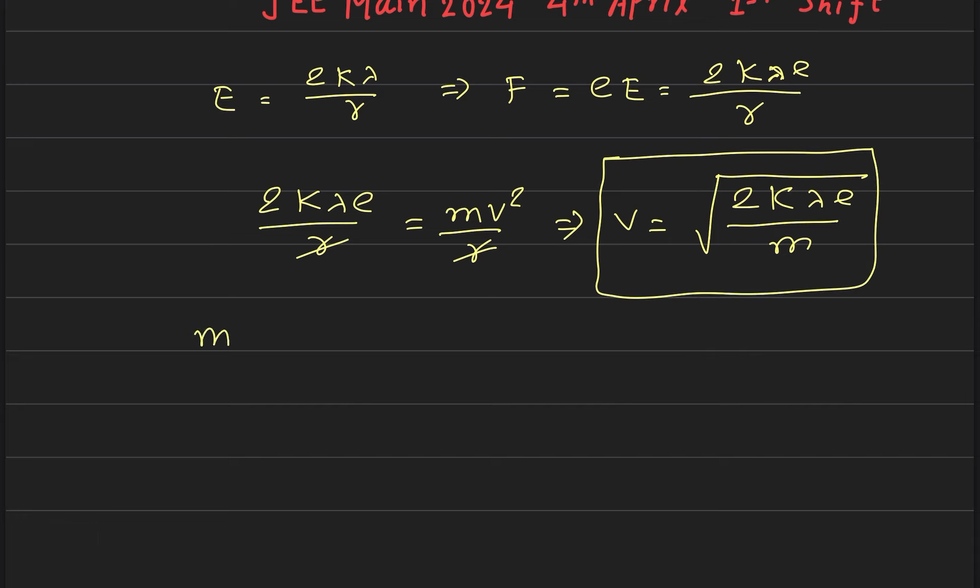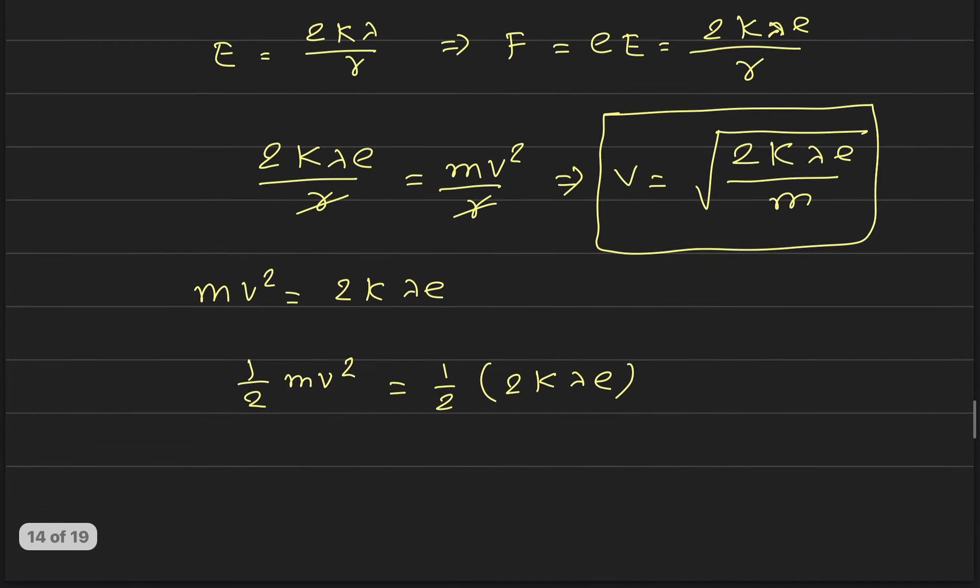So what will you get here? 2k lambda e. Now we multiply it with half. So 2k lambda e. So you see here, this whole kinetic energy doesn't depend on r. This kinetic energy doesn't depend on radius. Okay?